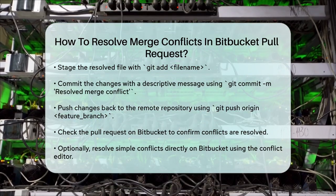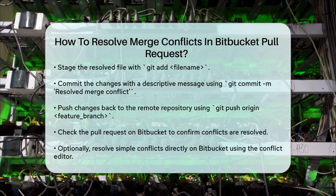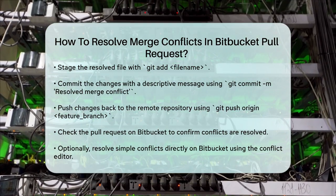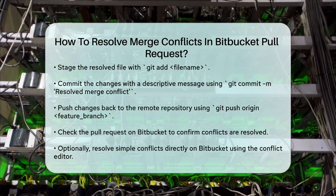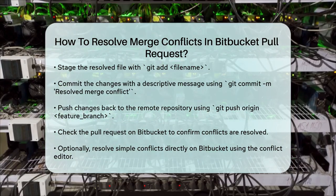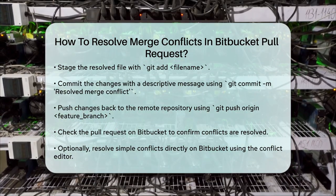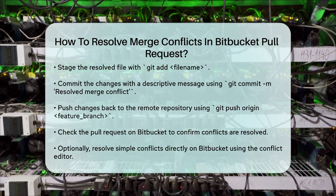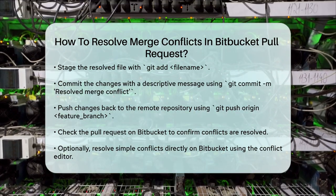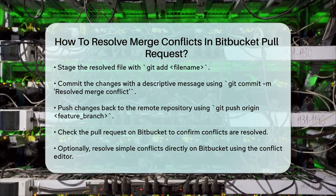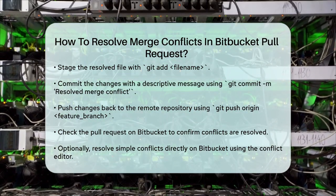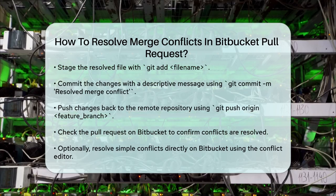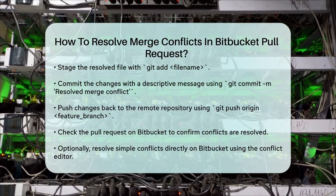If you prefer to resolve conflicts directly on Bitbucket, you can do so for simple conflicts. Go to the pull request, click on Resolve conflicts near the bottom, and use the conflict editor to resolve the issues. However, for more complex conflicts, you'll need to resolve them locally using the command line.